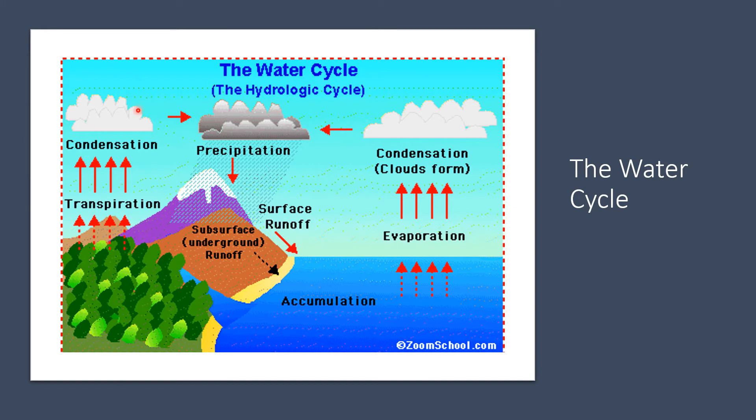It forms clouds, then precipitates, and then there is runoff into the sea or onto the land where trees are.